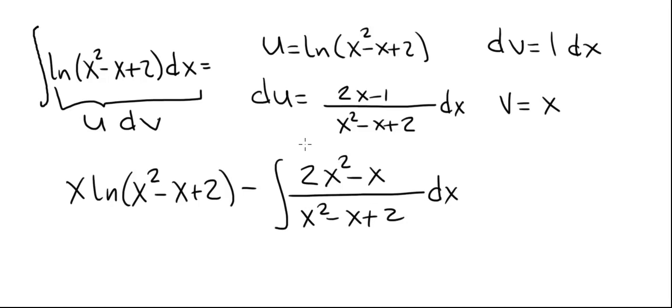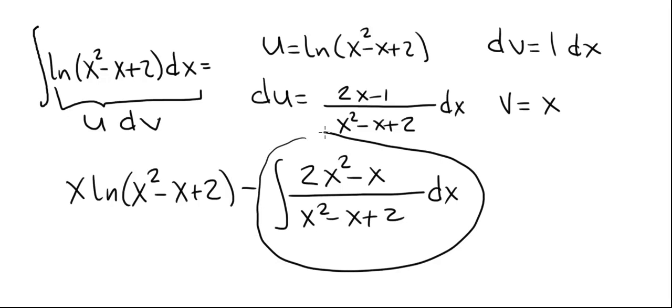Now this integral that's left on the right, that we still have to evaluate, is very different from the integral on the left, which is the integral of natural log of x squared minus x plus 2. This integral on the right is an integral of a rational function whose polynomial has degree 2 in the numerator and also degree 2 in the denominator.